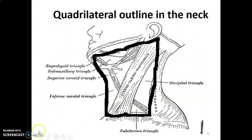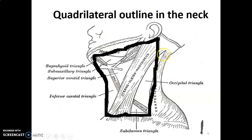To summarize: the quadrilateral outline has the anterior median line anteriorly, clavicle inferiorly, anterior border of trapezius posteriorly, and superiorly from the base of the mandible with a line joining the angle to the mastoid process to the superior nuchal line. The sternocleidomastoid divides this into the anterior triangle and the posterior triangle.